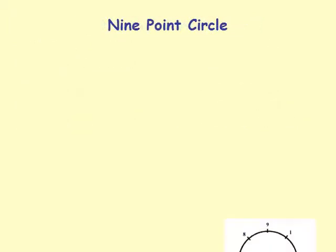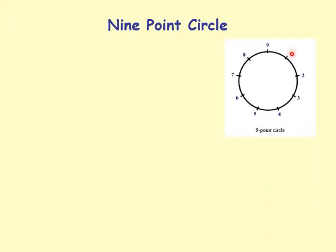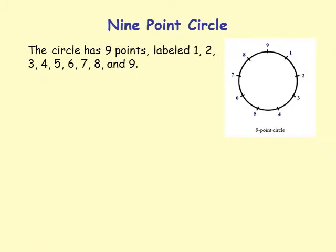This can be represented on a 9-point circle, which has 9 points labeled 1 through 9. The digit sum sequence cycles through 1, 2, 3, 4, 5, 6, 7, 8, 9 and repeats.